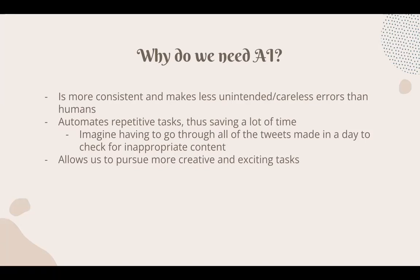Another reason is that artificial intelligence is automating repetitive tasks and saving a lot of time. As humans, we cannot go through a large amount of data in a very short amount of time, but this is why we use artificial intelligence. For example, if you are a Twitter employee and have to check all tweets in a day for inappropriate content, you can use an AI program to flag tweets with specific keywords or phrases. This also allows us as humans to pursue more creative and exciting tasks.